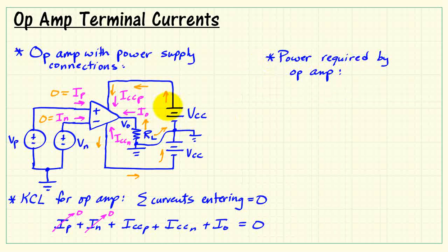Now let's look at the power required by the op-amp. The power, of course, is drawn from the power supplies. Recall that the power associated with any two terminal device is voltage times current. And for our case, we're looking at the pair of supplies here. So that would be VCC times the current ICCP plus the voltage source value times ICCN.